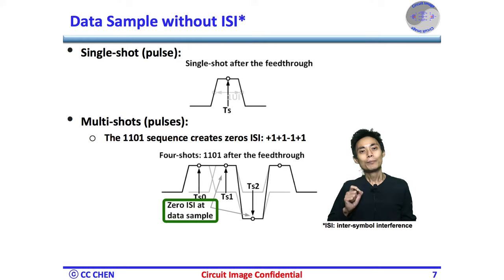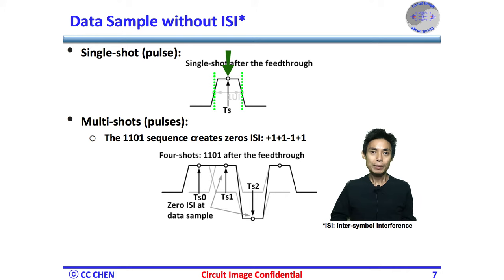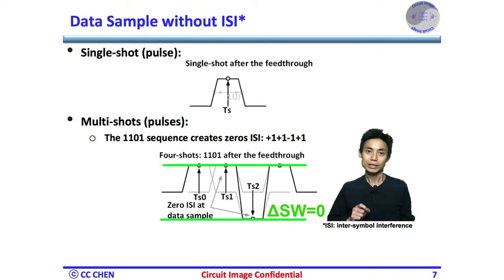Please be advised that here we only focus on the data sample which assumes the sampling point at the middle of the bit to get the best timing margin for the data. Lastly, since there is no ISI, the data samples at the middle of the multi-shot are maximum and equal for different patterns.